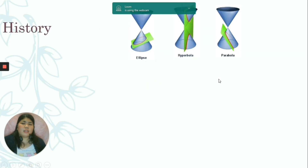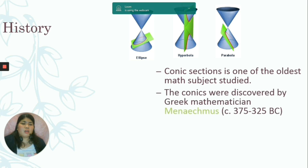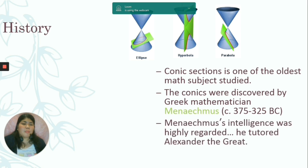Let's talk a little bit about the history of conic sections. Conic section is one of the oldest math subjects studied. The conics were discovered by a Greek mathematician named Menaechmus, around 375 to 325 BC. Menaechmus was highly regarded — he even tutored Alexander the Great.